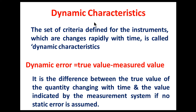Now for dynamic characteristics: the set of criteria defined for instruments which change rapidly with time are called dynamic characteristics. Dynamic error is the difference between the true value of a quantity changing with time and the value indicated by the measurement system, assuming no static error.